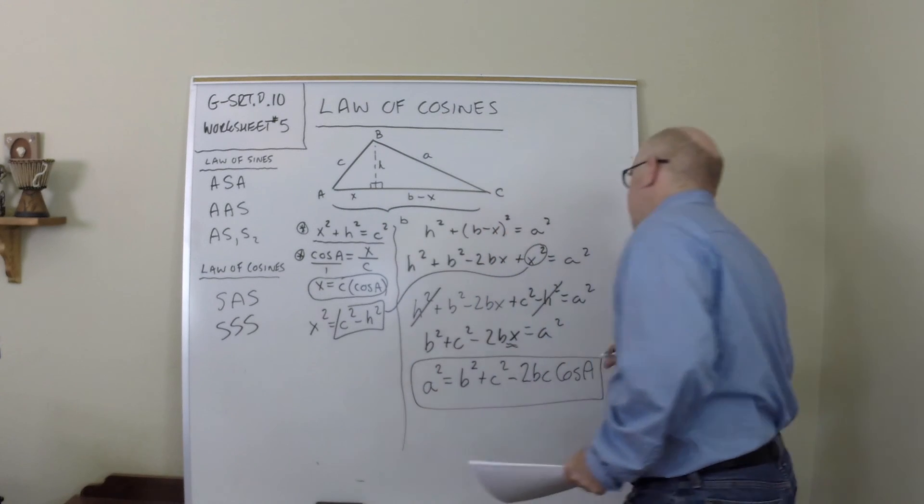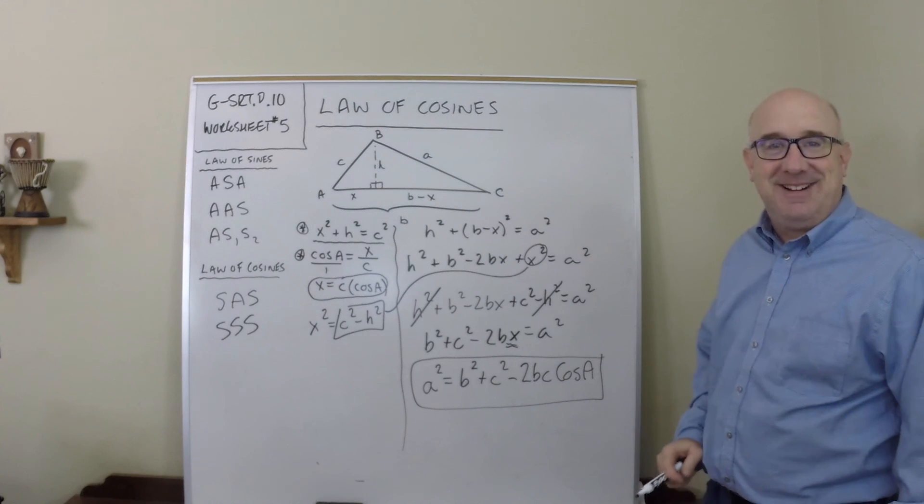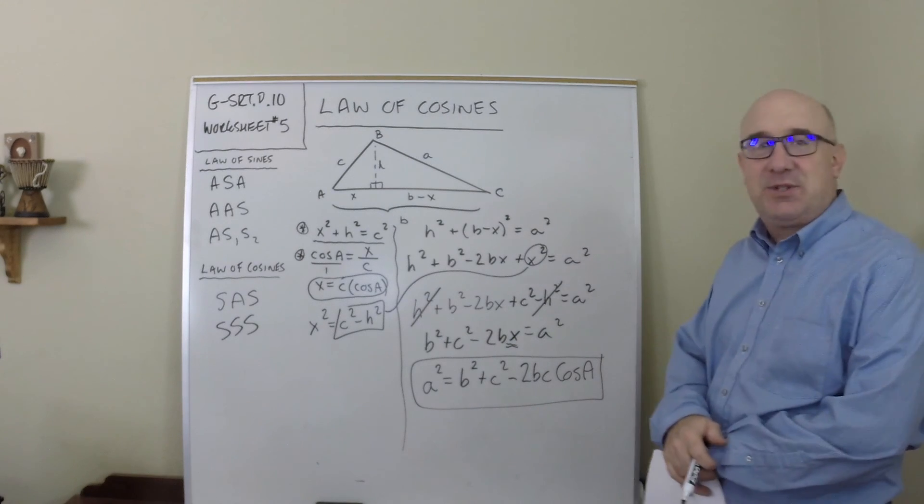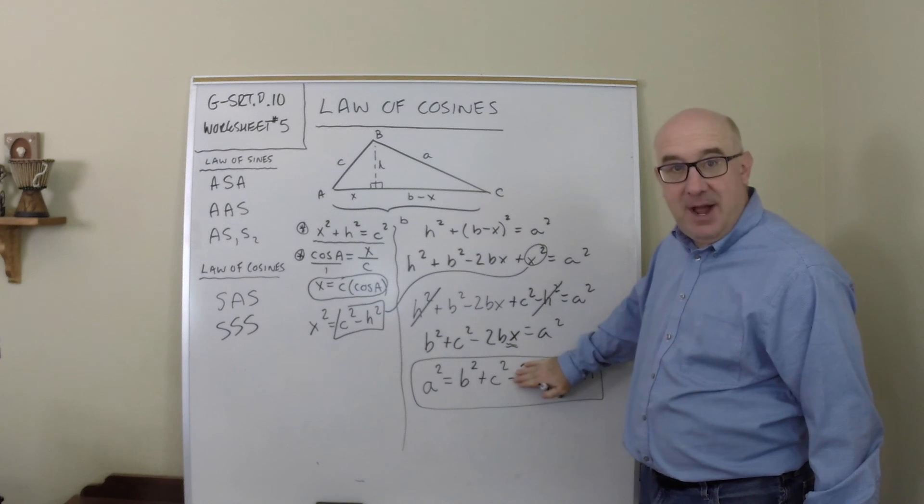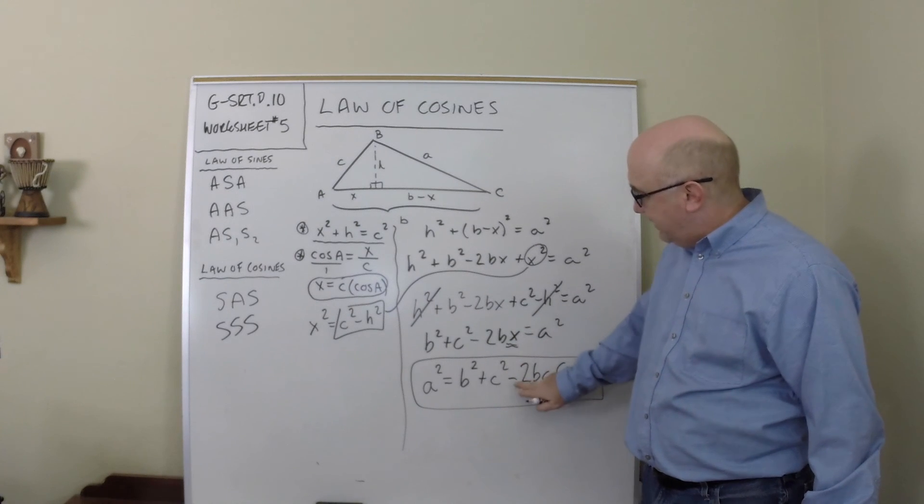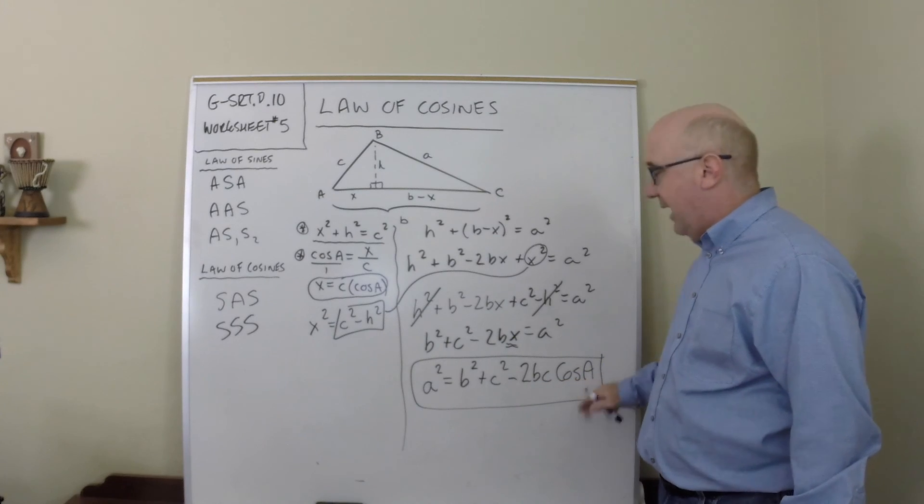Whether you like it or not, this is the final product of our cosine law. You can see the Pythagorean theorem hiding there, and then we subtract 2bc cosine of a.